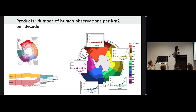One of the top products is the number of human observations per kilometer square per decade. This was partially mentioned already by Jess yesterday. We are hoping that using this we can see some trends, as shown on the right side of the slide.